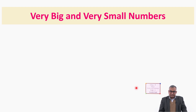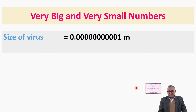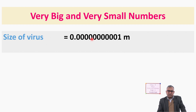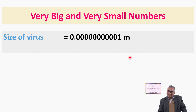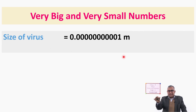Before starting about scientific notation, I am introducing two numbers. Look here — it is the size of a virus. Can you read it easily? It is 0.00000000001 meter — ten zeros and then 1. So it is very difficult to write as well as to read. It is a very small number — 1 upon 1 followed by 11 zeros.